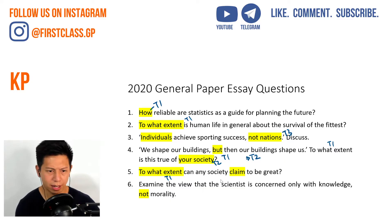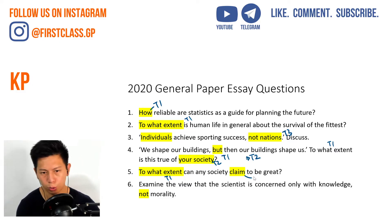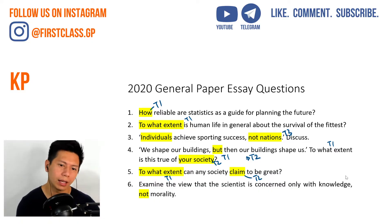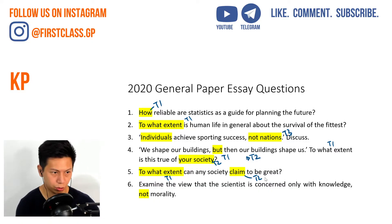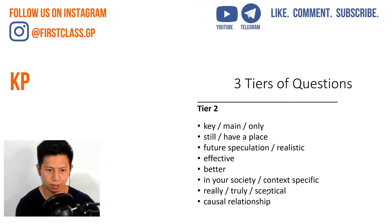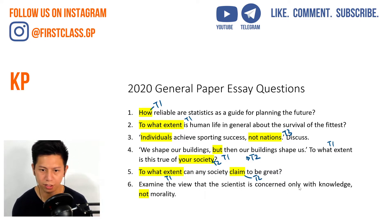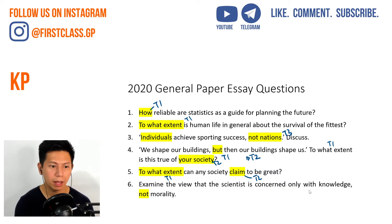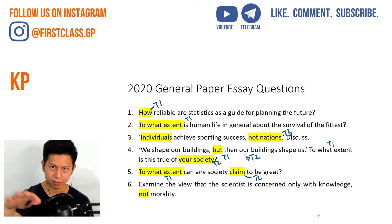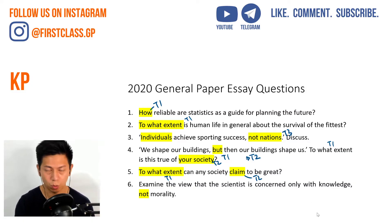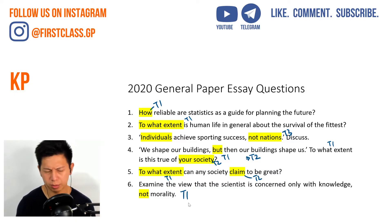Sometimes I just ignore 'to what extent' and look at the other elements. 'Can society claim to be great?' — the word 'claim' has a skeptical tone to it, so that's tier 2: the really/truly skeptical sort of question. 'Examine the view that the scientist is concerned only with knowledge, not morality.' This question has two questions in one — that is a double-barreled question, tier 1.